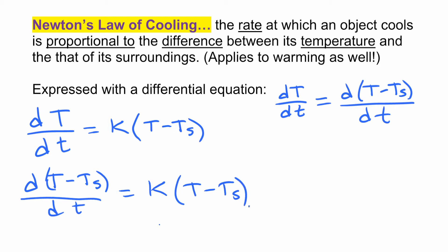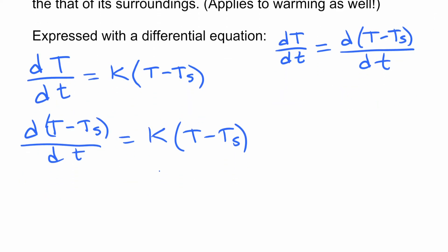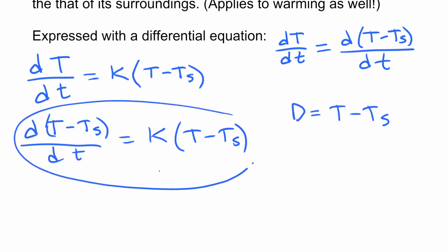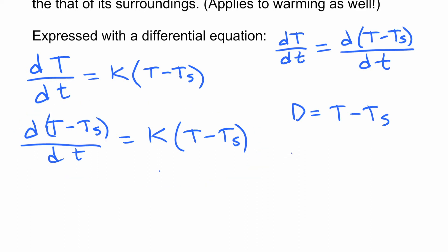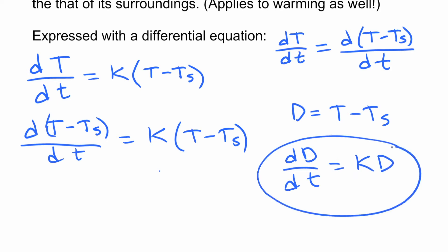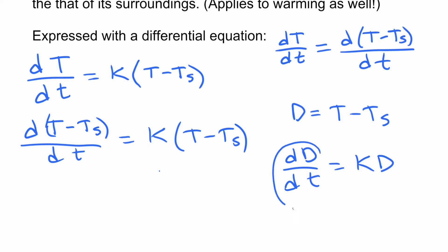We can write that as d(T - Ts)/dt equals the constant times (T - Ts). Then we can use a single variable — let's say D for difference — to be T minus Ts, and replace it in the differential equation so that we have dD/dt equals constant times D. This differential equation looks like what you've seen before: the rate of change of a quantity is proportional to the quantity itself.